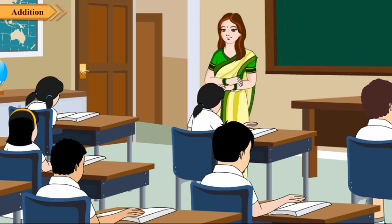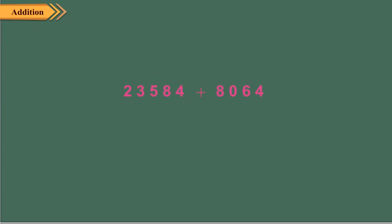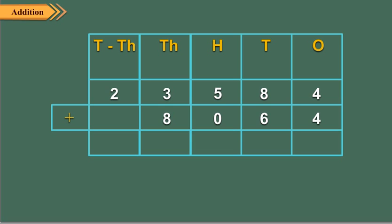In the examples shown here, regrouping was not involved. Now let us discuss the sums where regrouping is needed. Let us add 23584 and 8064. First, arrange the numbers in columns. Add ones: 4 ones plus 4 ones is equal to 8 ones. Write 8 in the ones place. Add tens: 8 tens plus 6 tens is equal to 14 tens. We regroup 14 tens as 1 hundred and 4 tens. So write 4 in the tens column and carry over 1 to the hundreds column.